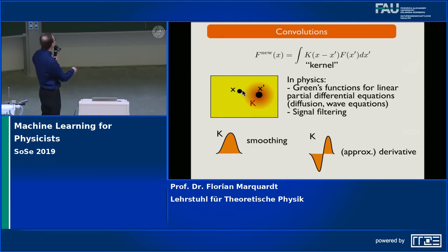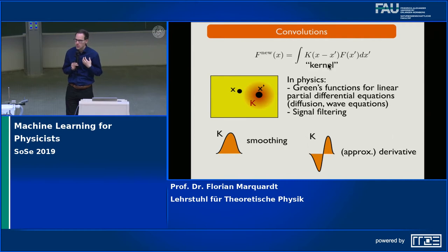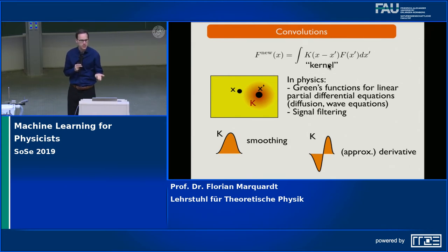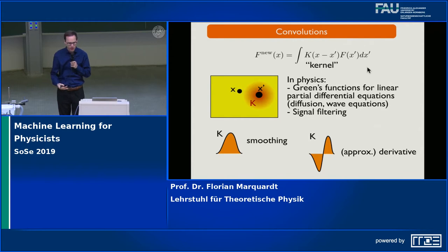In physics, we encounter convolutions again and again. Whenever you have linear partial differential equations — think of the wave equation or the diffusion equation — and you want to solve them, you can calculate what is known as the Green's function. The Green's function corresponds to this kernel. You can get the new wave profile out of the old one by doing this convolution operation, propagating the differential equation forward in time.